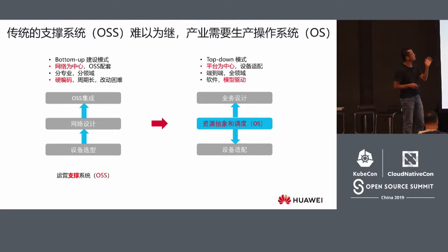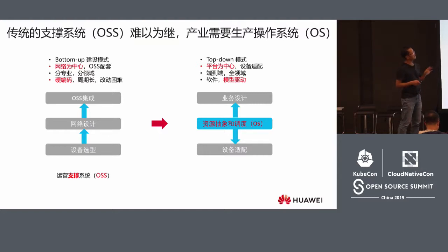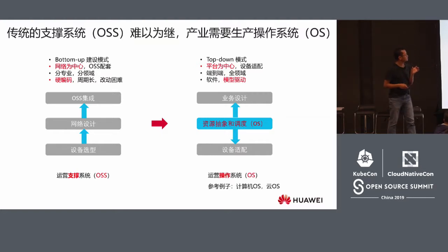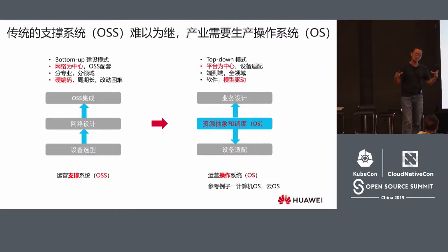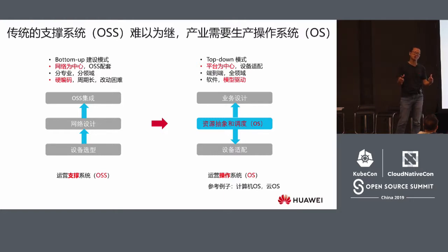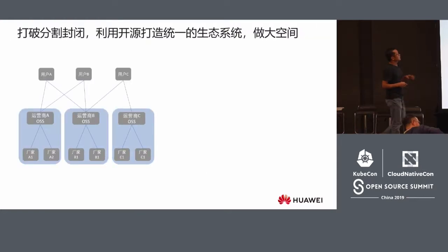The next step would be the matching of devices — a totally different workflow. ONAP is an operation system for operators. For example, Linux is a resource operation system within a small box; the cloud is an operational system within a very large database; and ONAP is a system covering thousands of operating spots all over the country.